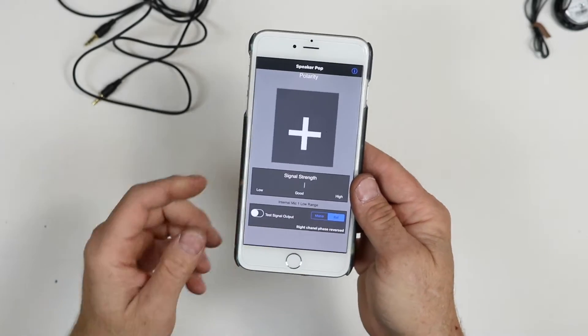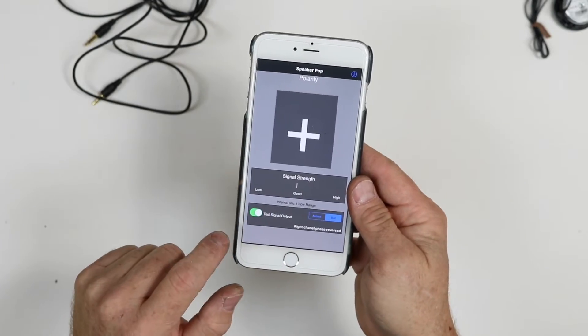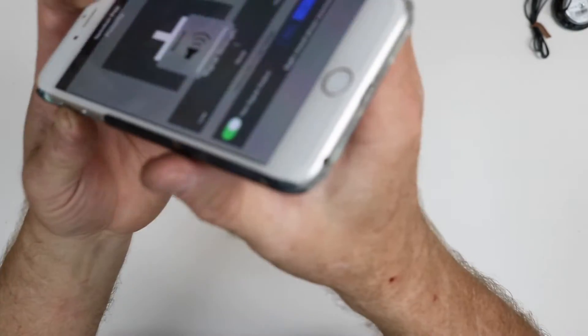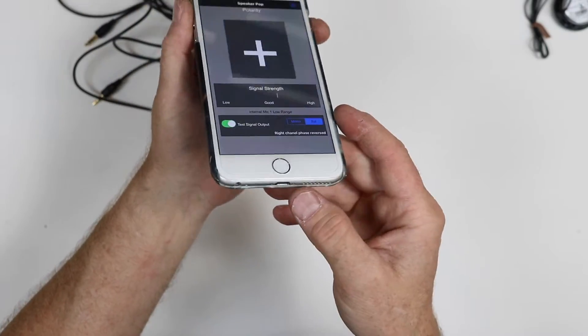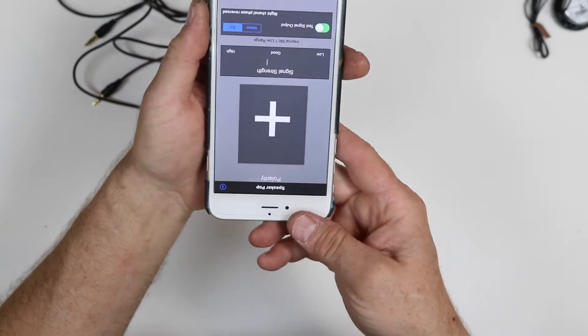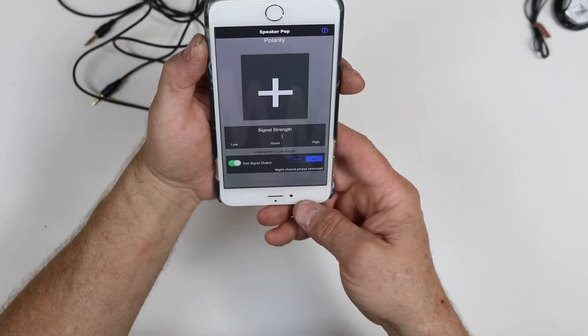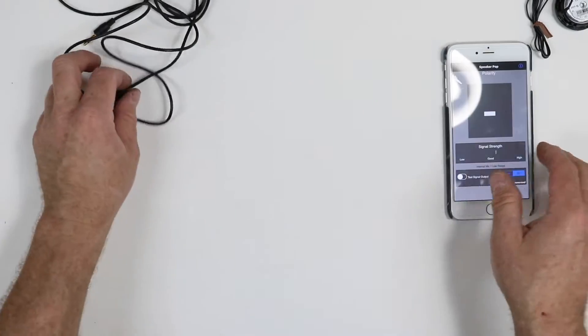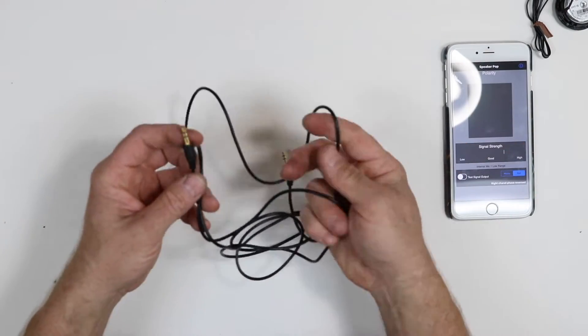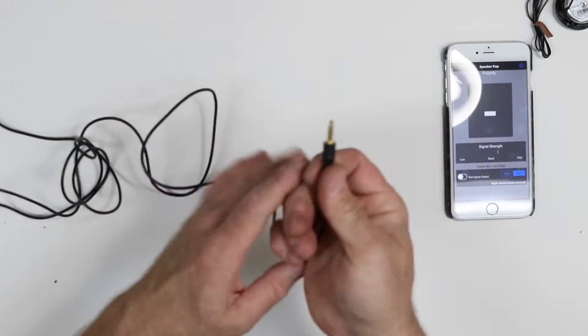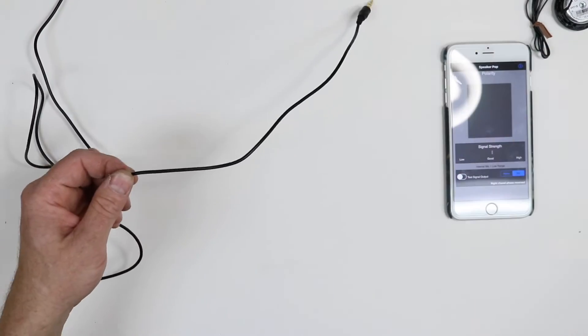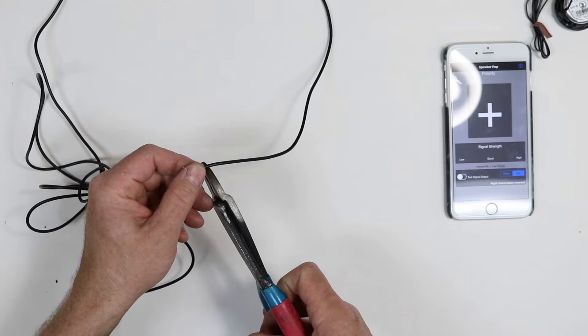Now, what Speaker Pop does is it puts a test tone out. Now, for this, what we're going to do is we need an aux jack also. Just get yourself a cheap one. It doesn't have to be all that fancy because we're going to do this.